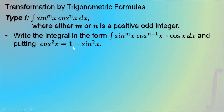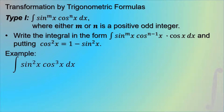There are four types of transformation by trigonometric formulas. The first type is when we have the integral of sinᵐx times cosⁿx dx, where either m or n is a positive odd integer. We write the integral separating one cosine factor, giving sinᵐx · cosⁿ⁻¹x · cos x dx, and then apply the Pythagorean identity.